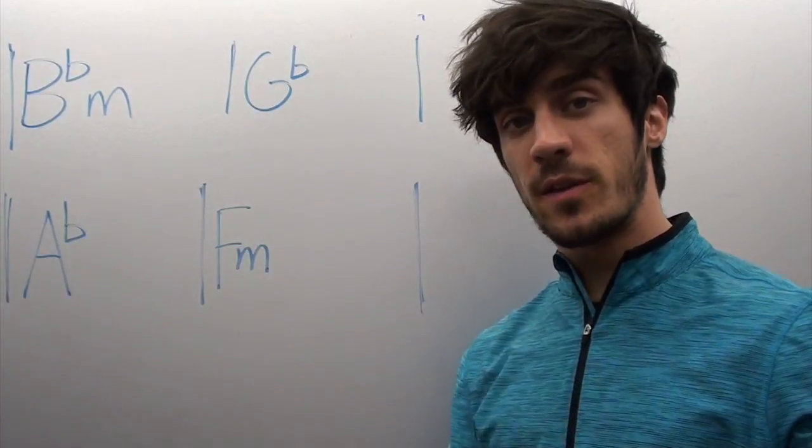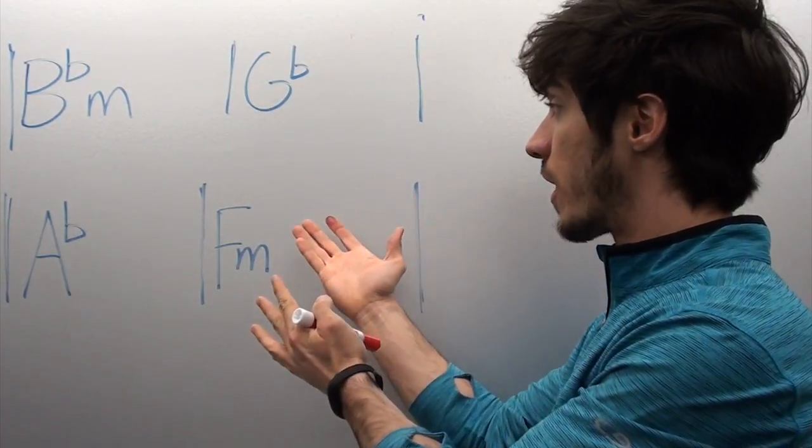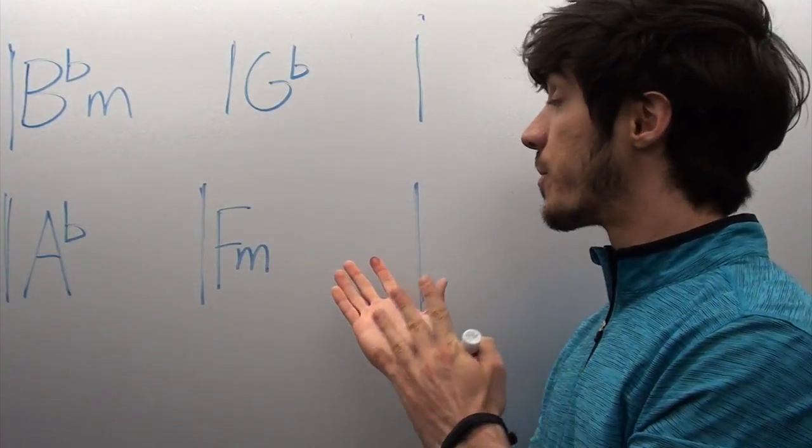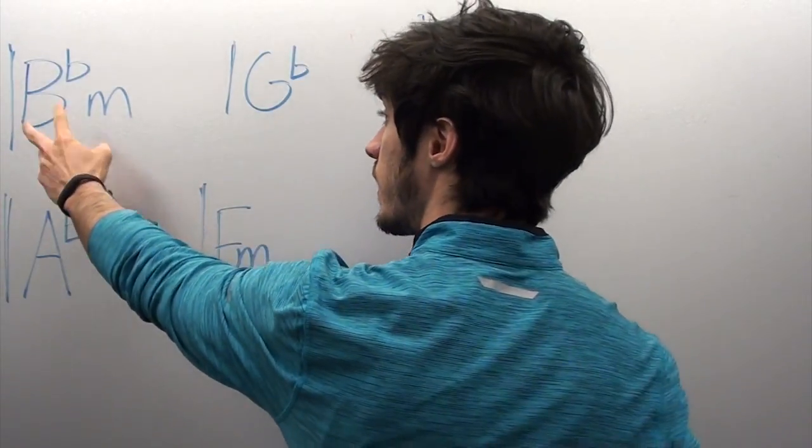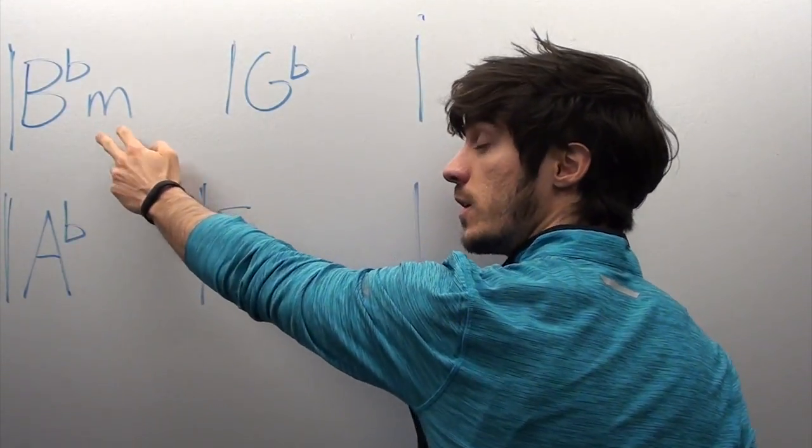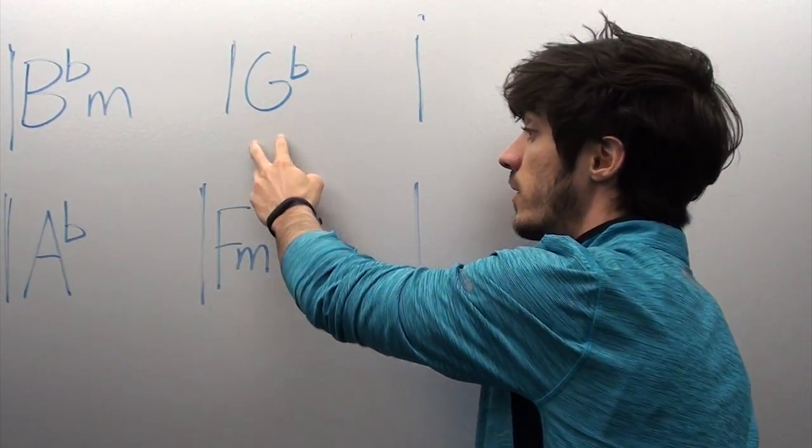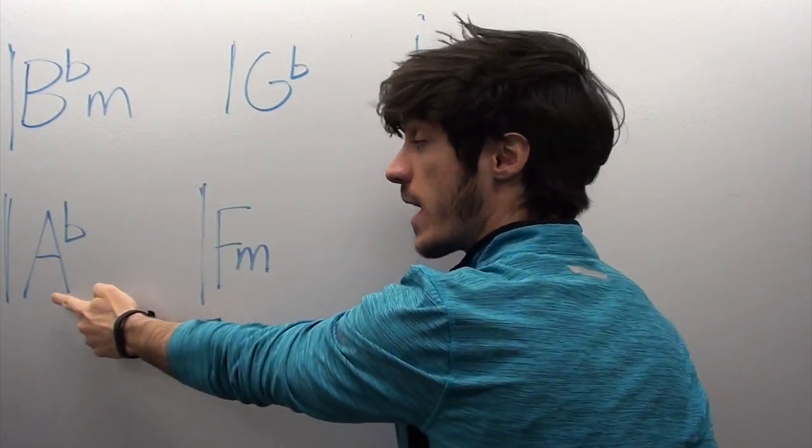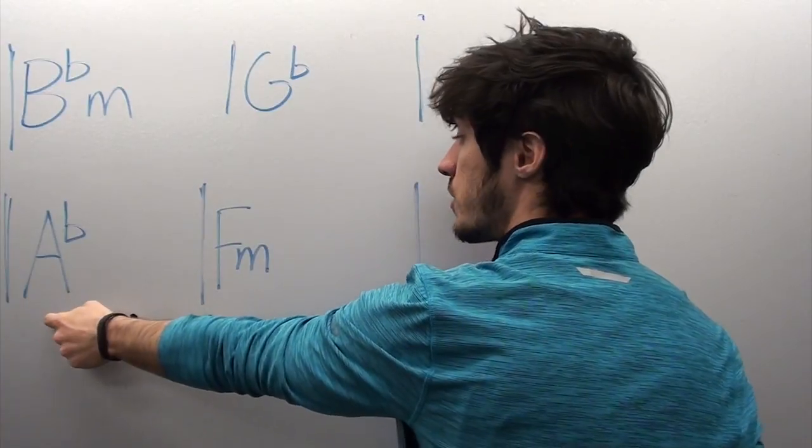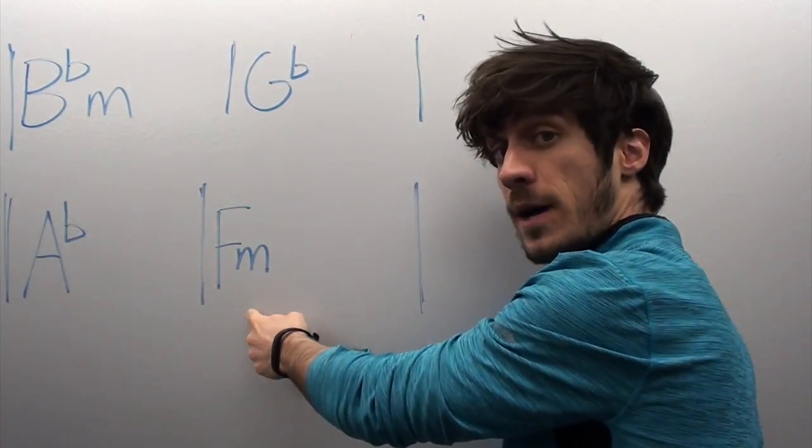So the first thing Sia does in this song that makes it a success is its chord progression. This is the chord progression from the verses. It goes B flat minor - party girls, don't get hurt. Can't feel anything, that's on a G flat. When will I learn? I'd push it down. A flat. I push it down. F minor right here at the end.